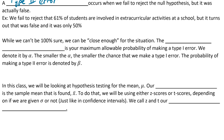While we can't be 100% sure, we can be close enough depending on the situation. The level of significance is your maximum allowable probability of making a Type 1 error, and we denote it by alpha. The smaller the alpha, the smaller the chance of making a Type 1 error, so we want alpha to be pretty small. The probability of making a Type 2 error is denoted by beta, but in this class we're mainly going to focus on alpha.